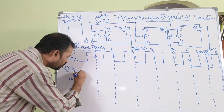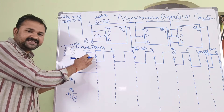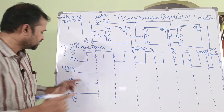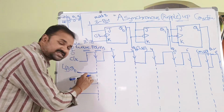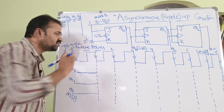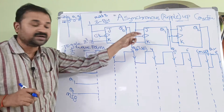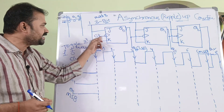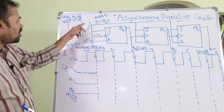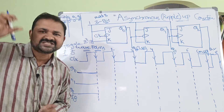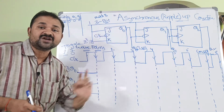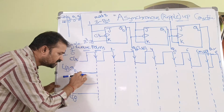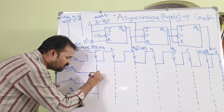Initially there is no clock pulse applied, so Q2 = 0, Q1 = 0, Q0 = 0. The output stays 0 until we get the falling edge. We get Q0 output at the falling edge of every clock pulse. When J and K are both 1, at the negative edge of the clock pulse the output will be toggled. So now Q0 was 0; it will be toggled to become 1.